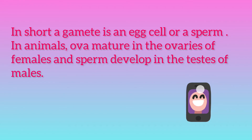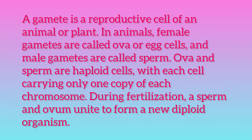In biology, the type of gamete an organism produces determines the classification of its sex. This is an example of anisogamy or heterogamy, the condition in which females and males produce gametes of different sizes. In contrast, isogamy is the state of gametes from both sexes being the same size and shape, and given arbitrary designators for mating type.